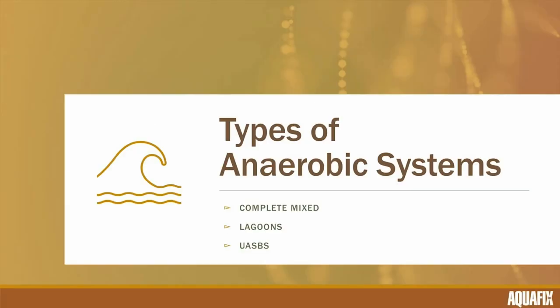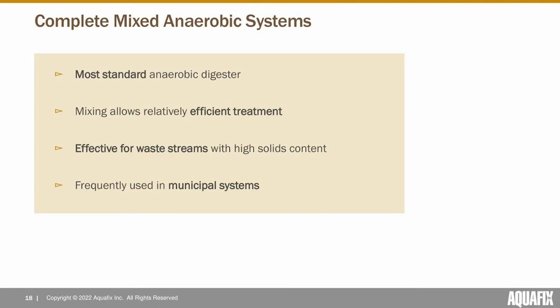Starting with complete mixed anaerobic digesters — the most standard type. They usually have a recirculating pump or mechanical impeller for efficient mixing, making them good at reducing solids levels. They're better for digesting waste-activated sludge or primary sludge solids, which is why they're frequently used in municipal systems. They take up quite a bit less space than a lagoon and tend to generate better quality biogas because you're able to maintain a more consistent environment and better disintegration and hydrolysis.